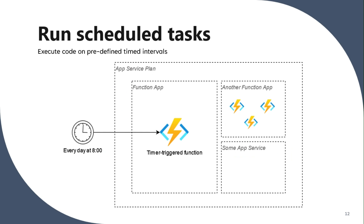The third use case: Azure function can also be scheduled using a cron job. You can schedule the Azure function to run every day at eight or nine o'clock. That's enough talking about Azure function — let's go into the portal and see how to create your first Azure function.